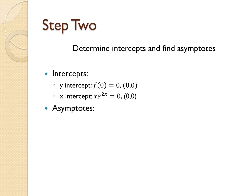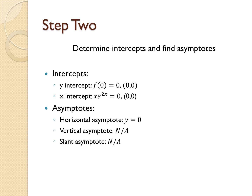For asymptotes, we have to consider what possible outputs or inputs our function can have. The horizontal asymptote is y = 0, since this is an exponential function that has not been shifted up or down. However, because we have no points at which we are undefined, we have no vertical or slant asymptotes.